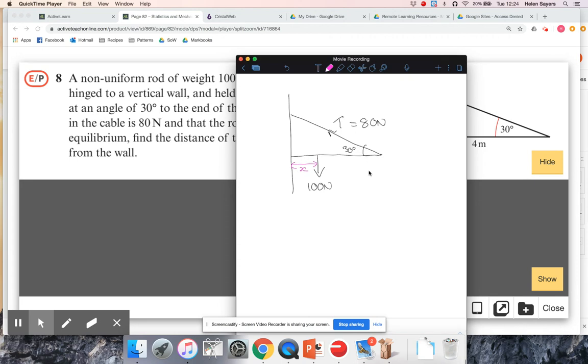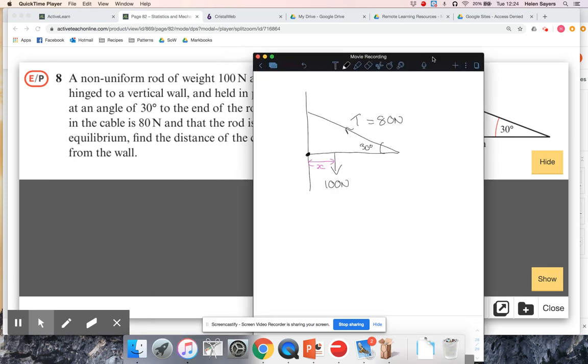Okay, so we're going to have to do a little bit of trig, but I don't think there's anything too bad here. I'm going to call that A, and I am going to take moments about A because I've only got two forces to consider. I've got the mass of the rod, so the moment due to that is going to be 100 newtons times its distance from A. That's going to be the only clockwise moment.